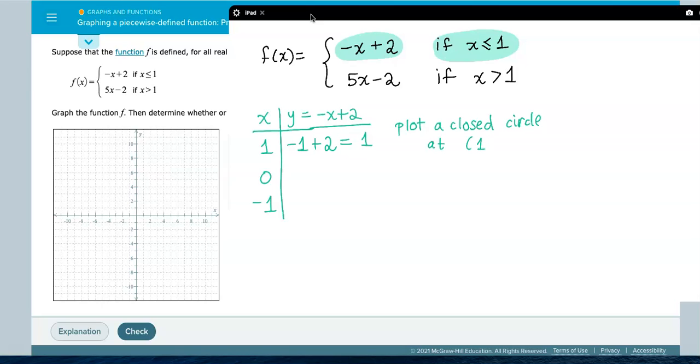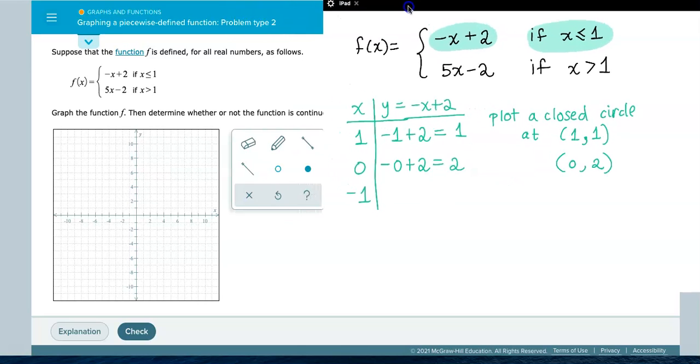Plot a closed circle at 1, 1. And then what you need to do is plot another point. So let's find it. Negative 0 plus 2 is simply 2. So just plot a regular point 0, 2. I think the way they did this, you don't really need a third point. So let me go ahead and try these two.